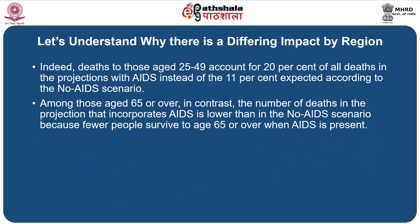Indeed, deaths to those aged 25 to 49 account for about 20% of all deaths in the projections with AIDS, instead of 11% expected according to the no-AIDS scenario. Among those aged 65 or over, in contrast, the number of deaths in the projections that incorporate AIDS is lower than the no-AIDS scenario, because very few people survive to the age of 65 or over when AIDS is present.